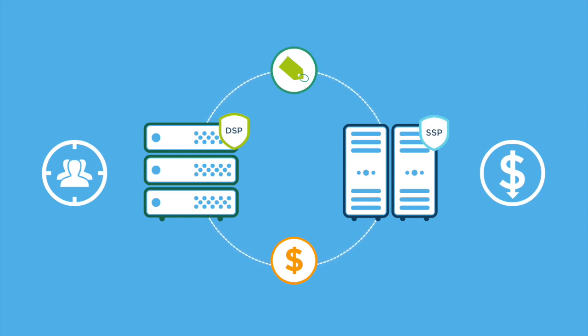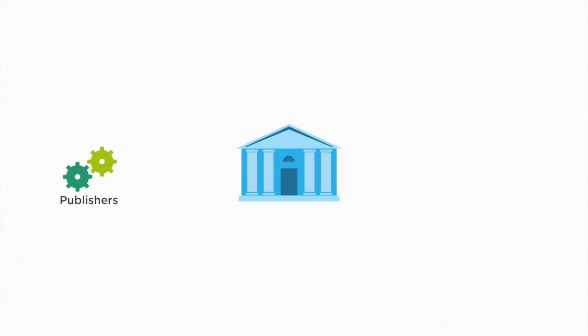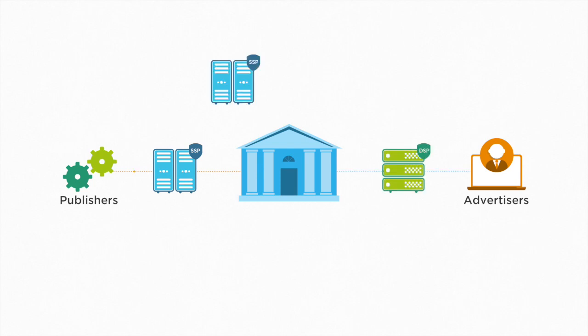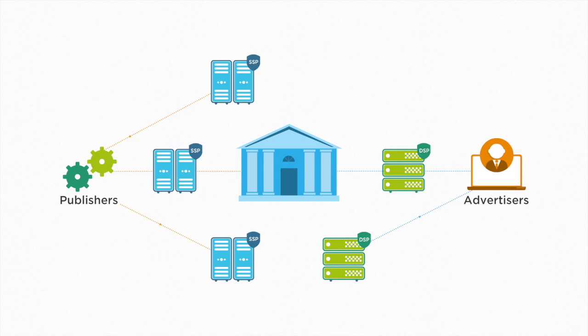This arrangement offers an additional solution in the form of ad exchanges. An exchange is like a stock market for ads, in which ad space is bought and sold on an impression-by-impression basis. Multiple publishers and SSPs provide this inventory, and multiple advertisers via DSPs bid on it.